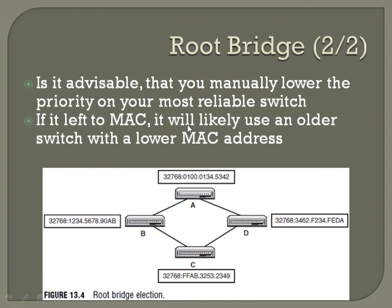If it's left to just the MAC address, you'll likely end up using an older switch with a lower MAC address. For example, here you've got a group of four switches all interconnected with switch IDs attached to each. Each number is basically the priority followed by the MAC address, and all four have 32768 set as priority because no one's made any changes. Since they all have equal priority, you determine the root bridge by the lowest MAC address. Switch A starts with 0100, which is lower than any of the others, so it's going to end up being the root bridge.